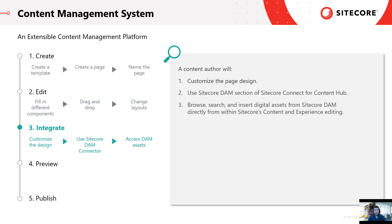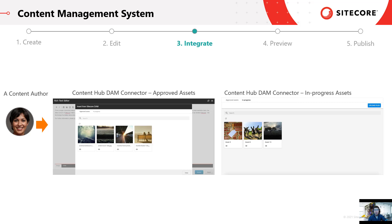Third, unlike other siloed CMS platforms, Sitecore can be easily integrated with design applications, systems, and data. For example, if a design team's digital assets are stored in a separate system, Sitecore offers seamless integrations with Content Hub where creative teams only need to focus on one system as opposed to switching between different interfaces. Using the Sitecore DAM section of Sitecore Connect for Content Hub, Minnie is able to browse, search, and insert digital assets from Sitecore DAM directly from within Sitecore Experience Editor.